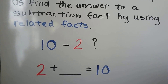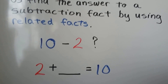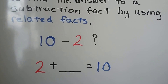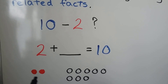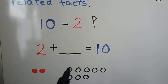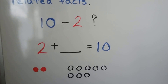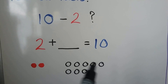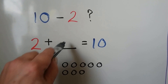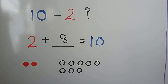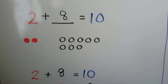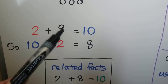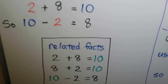10 minus 2 — we can find what it equals, the difference, by doing 2 plus some number is equal to 10. If we have two counters, we have to draw more counters until we get to 10: 2, 3, 4, 5, 6, 7, 8, 9, 10. How many counters did we have to add? 8. So 2 plus 8 is equal to 10, and therefore 10 minus 2 is equal to 8. Those are our related facts.